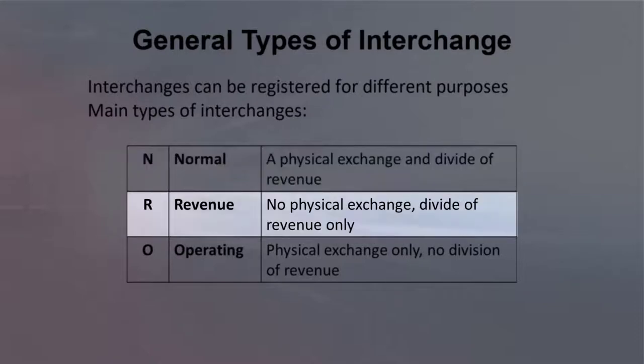At a revenue-only interchange point, cars are not physically exchanged, but revenue is divided as though the cars were exchanged. Sometimes carriers find it advantageous to consolidate physical interchange points. Freight contracts, however, specify revenue divisions based on specific physical interchange points. In these cases, the carriers can agree to consolidate the physical interchange points, but still divide revenue as required in the freight contract, and a revenue-only interchange point can be registered.